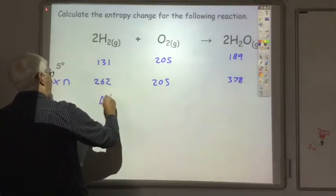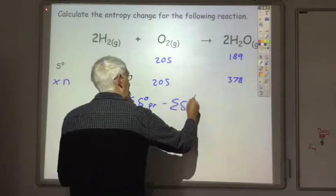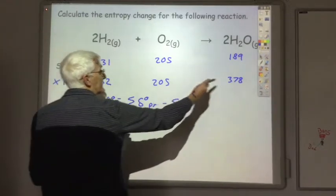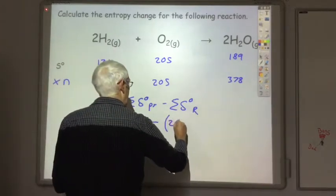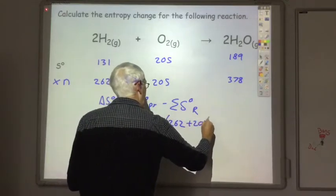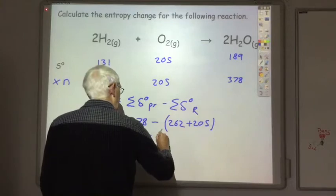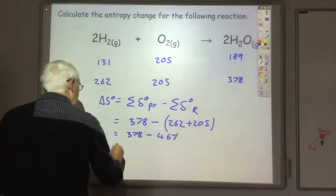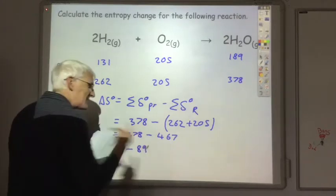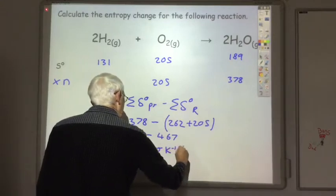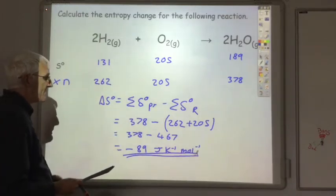So, the entropy value is the sum of the entropy of the products minus sum of the entropy of the reactants. So, the product's 378 minus the reactants, which are 262 and 205. So, that's 378 minus 467. So, that would be negative 89 units, joules per kelvin per mole. So, the entropy change for this reaction is minus 89 joules per kelvin per mole.